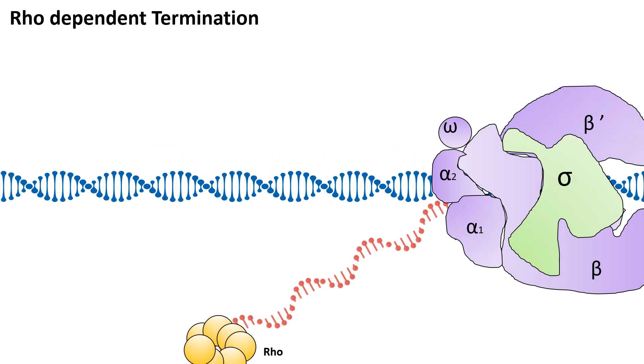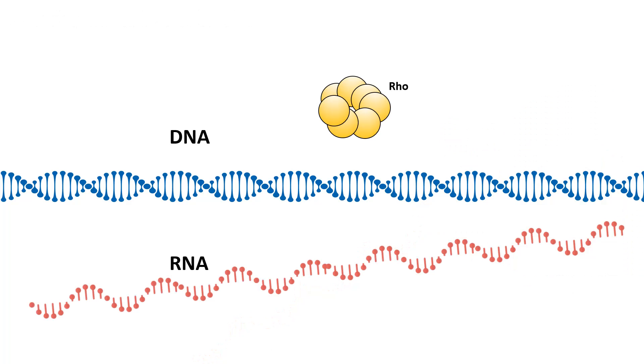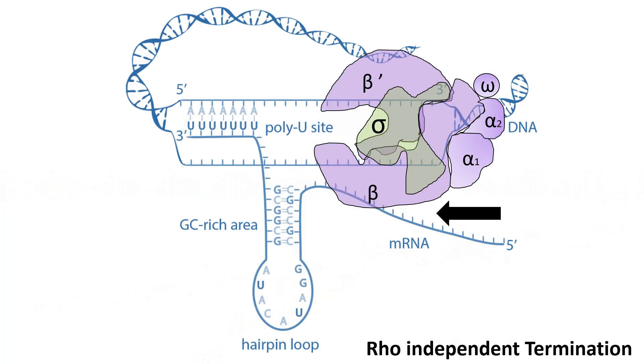We now come to an overview of termination in bacteria. The termination of transcription depends upon a termination sequence present at the end of the transcript. There are two modes of termination. The first is rho-dependent termination: rho is a helicase that can move across the RNA and free it from the hold of the RNA polymerase, causing the whole complex to dissociate and releasing the synthesized RNA from the DNA.